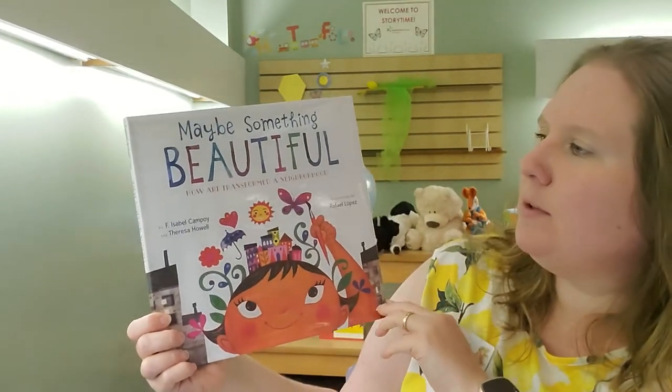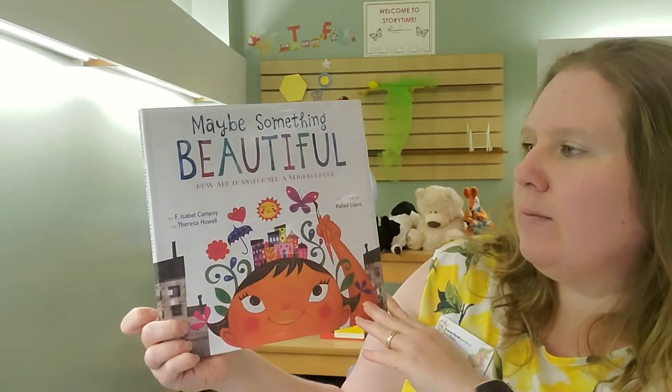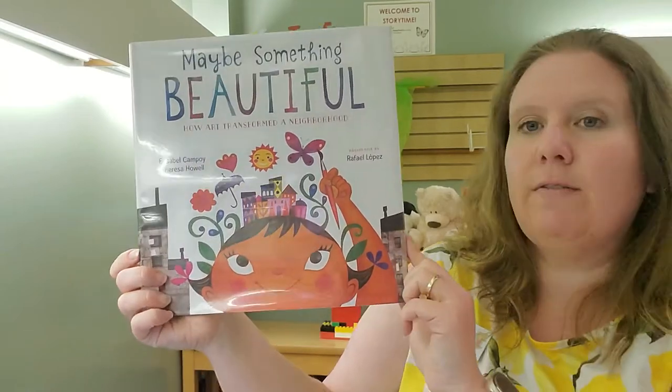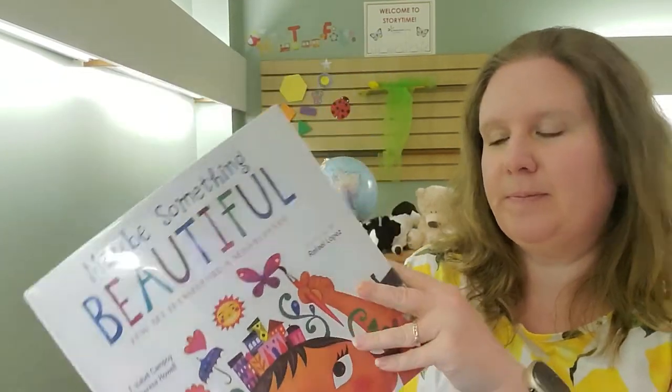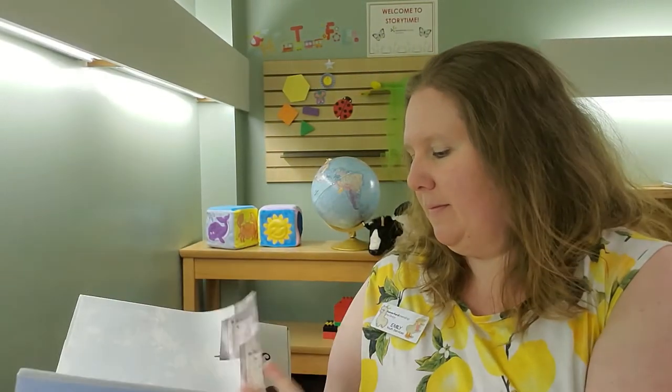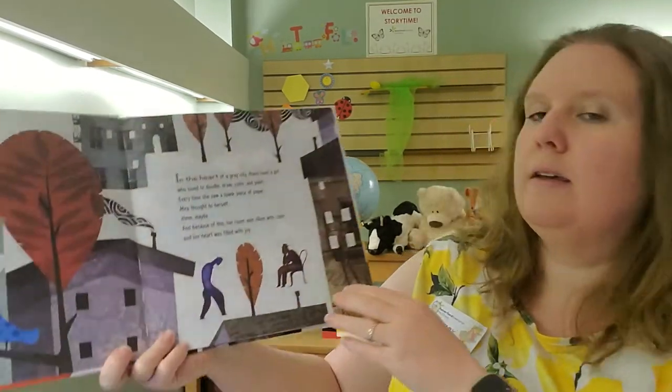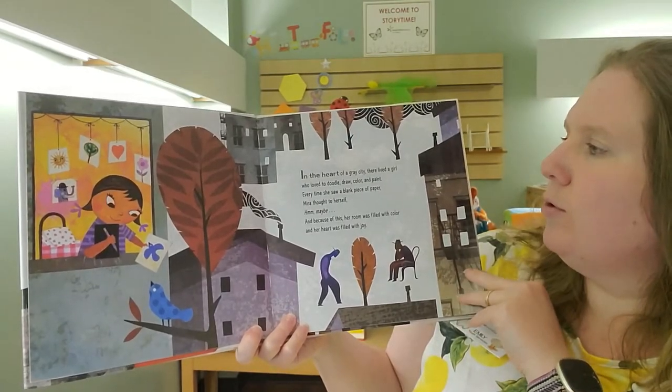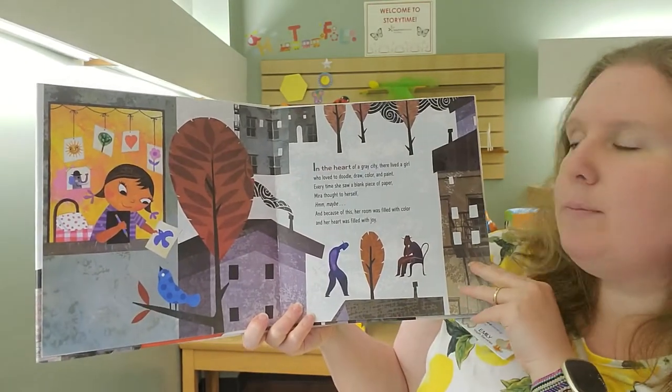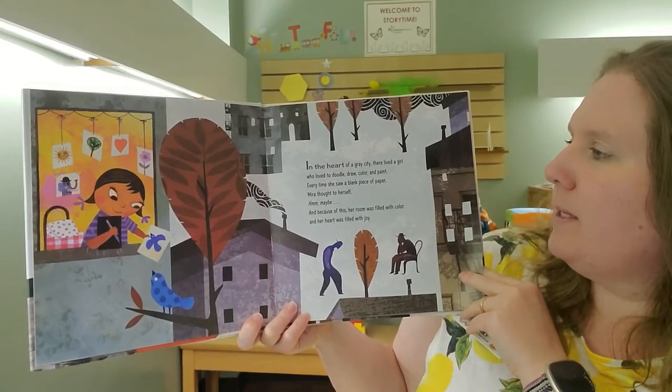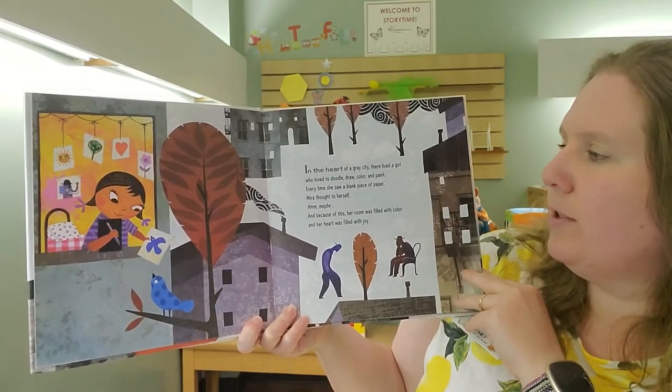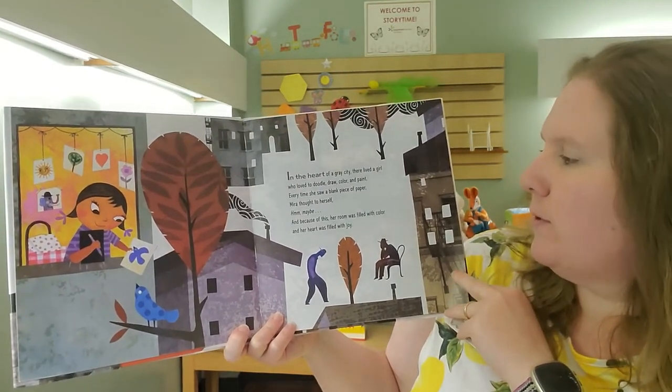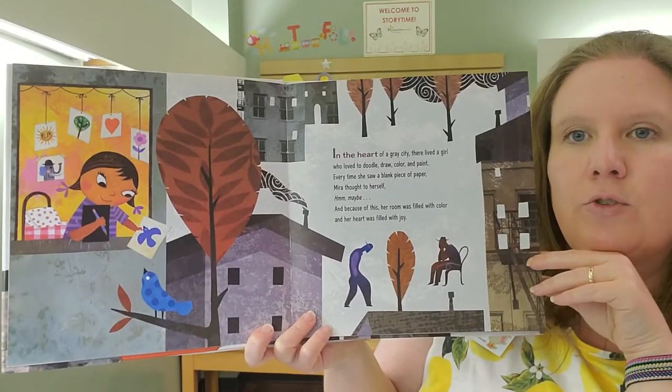Maybe Something Beautiful, How Art Transformed a Neighborhood, written by F. Isabel Campoy and Teresa Howell and illustrated by Rafael Lopez. In the heart of a gray city, there lived a girl who loved to doodle, draw, color, and paint. Every time she saw a blank piece of paper, Mira thought to herself, hmm, maybe. And because of this, her room was filled with color and her heart was filled with joy.